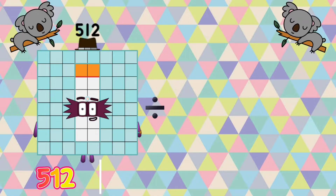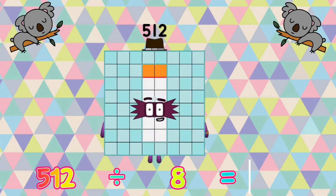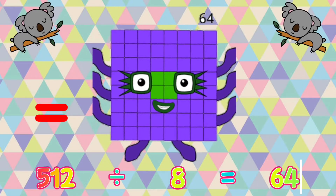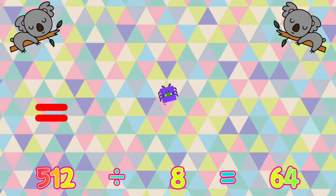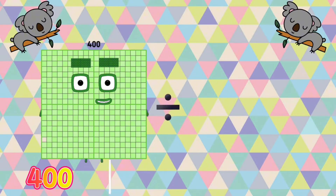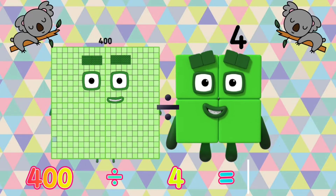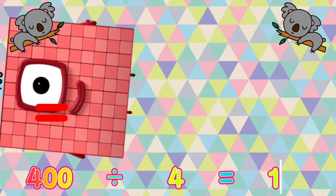512 divided by 8 is equals to 64. 400 divided by 4 is equals to 100.